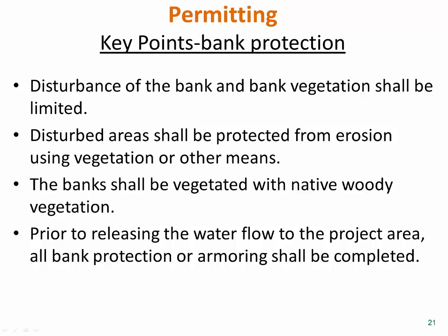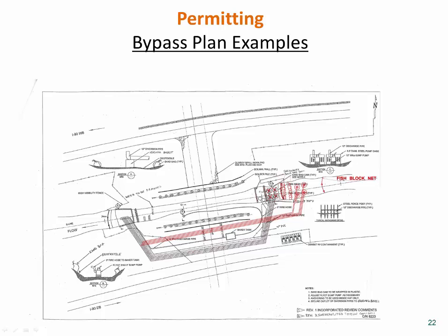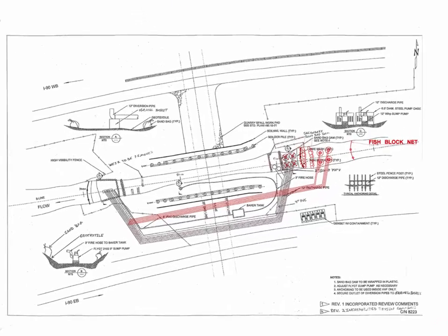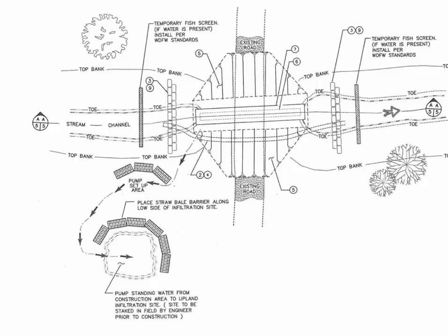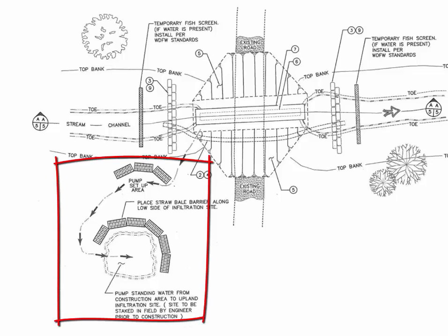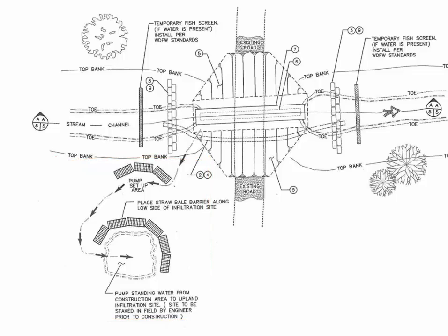Disturbance of the bank and bank vegetation should be limited to that necessary to construct the project. The bypass system should have the capacity to handle the two-year peak flow or greater. If the system will be in place over winter, it will likely need to be fish passable and able to pass all expected flows over winter. This example shows pumped water discharging into a straw bale infiltration site prior to returning to the creek.